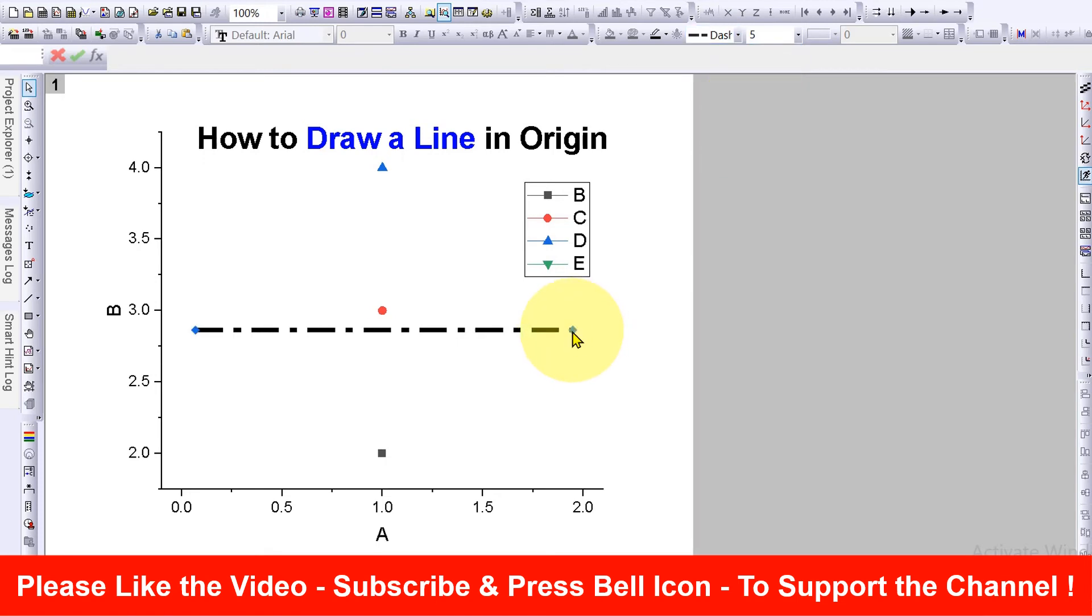You can also rotate this line like this and press Shift on your keyboard so the line will be straight. Then you can just move it freely anywhere inside the Origin graph.